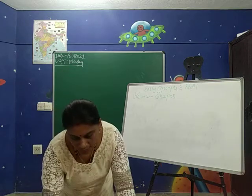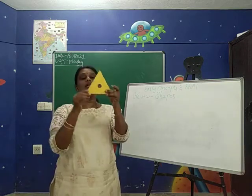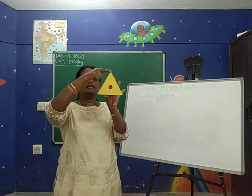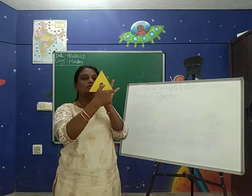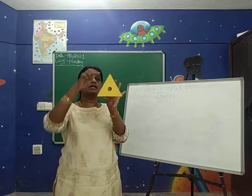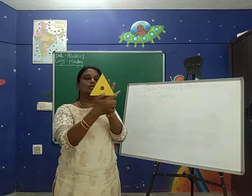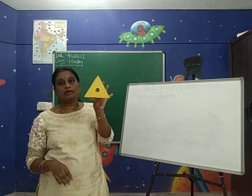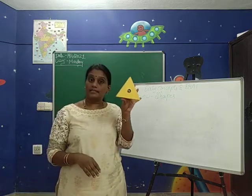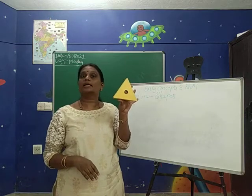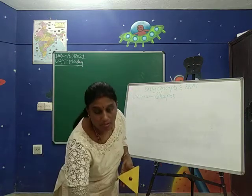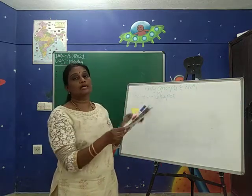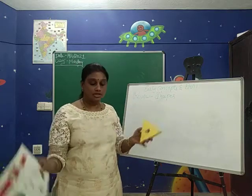Next, we will go for the triangle. What shape is this, children? This is a triangle shape. A triangle has three sides — one, two, three. Three sides and three corners are there in triangle. The examples for the triangle are ice cream cone, mehendi cone, and birthday cap. A yacht and a piece of cake will also be triangle shapes.